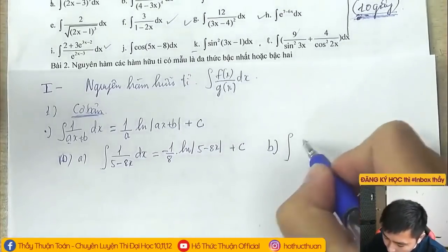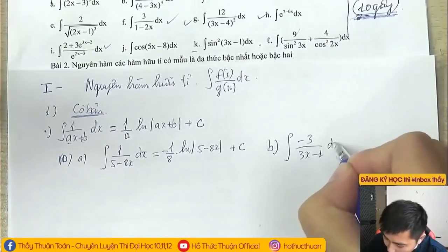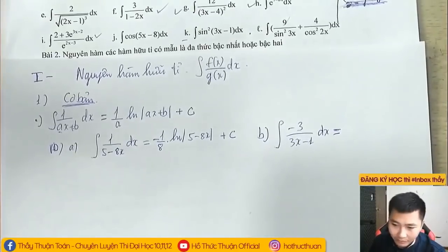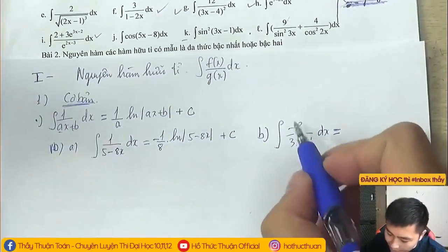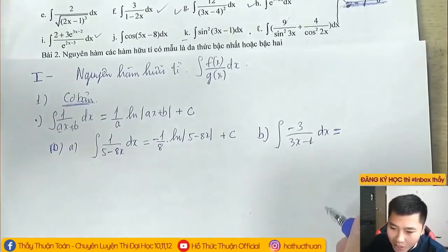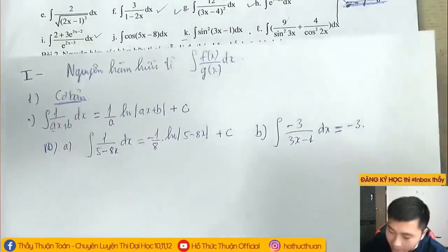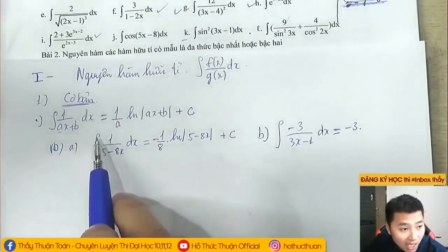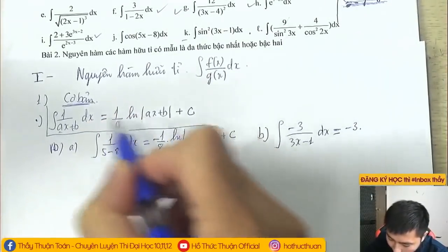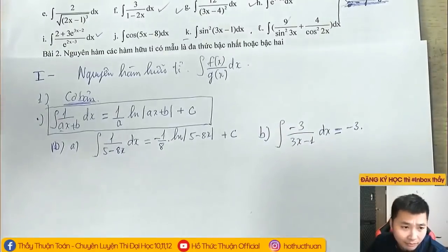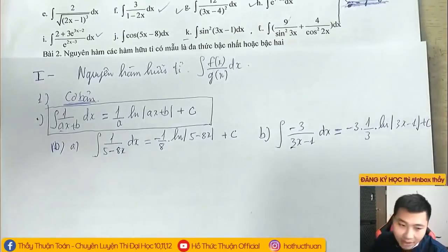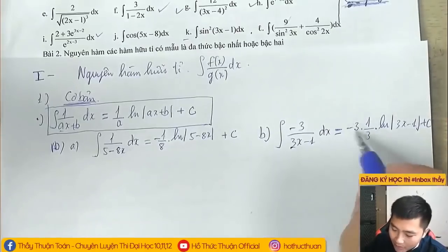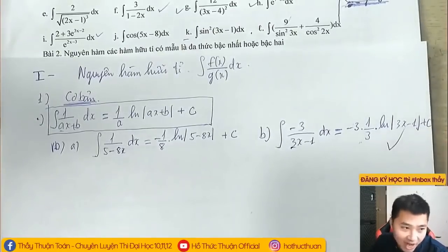Ví dụ thứ 2: tìm nguyên hàm của 3/(3x+1) dx. Ngay và luôn khi đọc xong con nguyên hàm này, khẳng định là thằng này có công thức. Số 3 là một con số, nó không liên quan đến quá trình tính nguyên hàm, nên chúng ta có quyền đưa ra ngoài. Bài này dùng công thức: A bằng 3, vậy ta có (1/3) nhân ln|3x+1| cộng C. Rõ ràng 3 chia 3 thì bằng 1. Đó là dạng cơ bản thứ nhất.